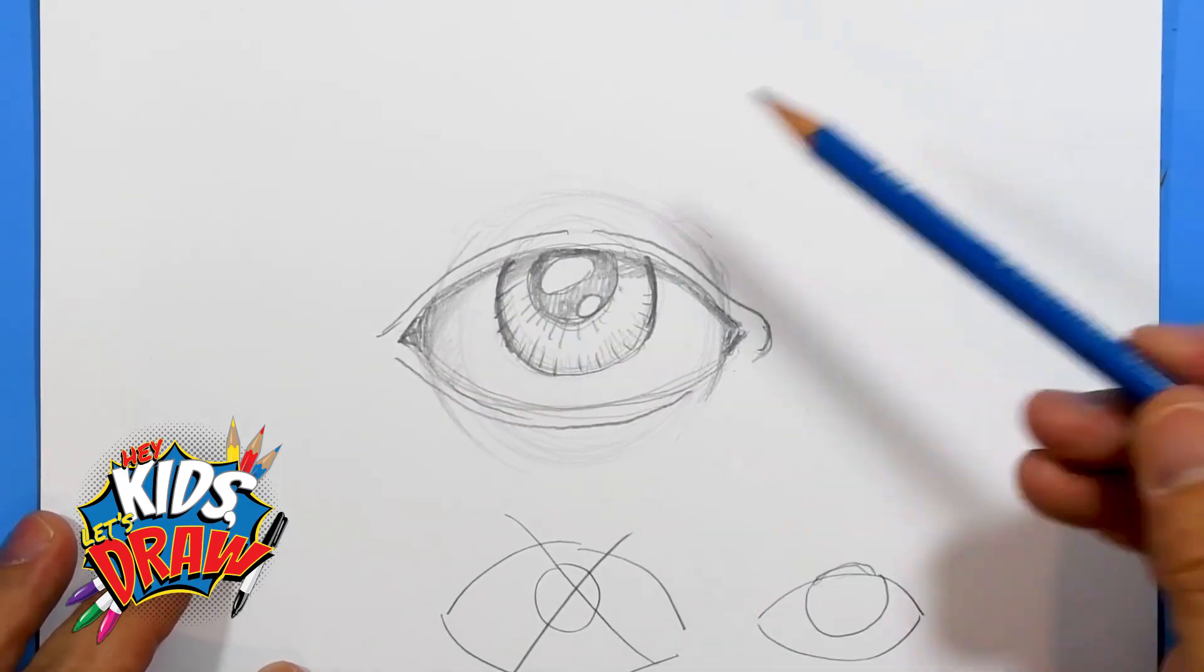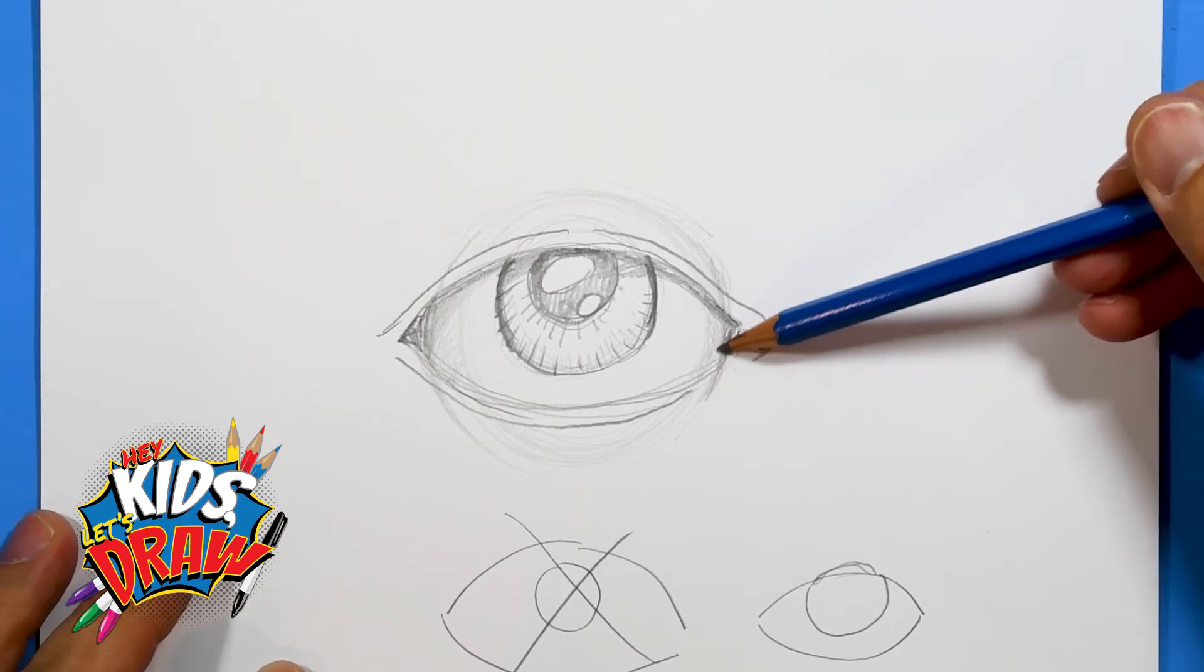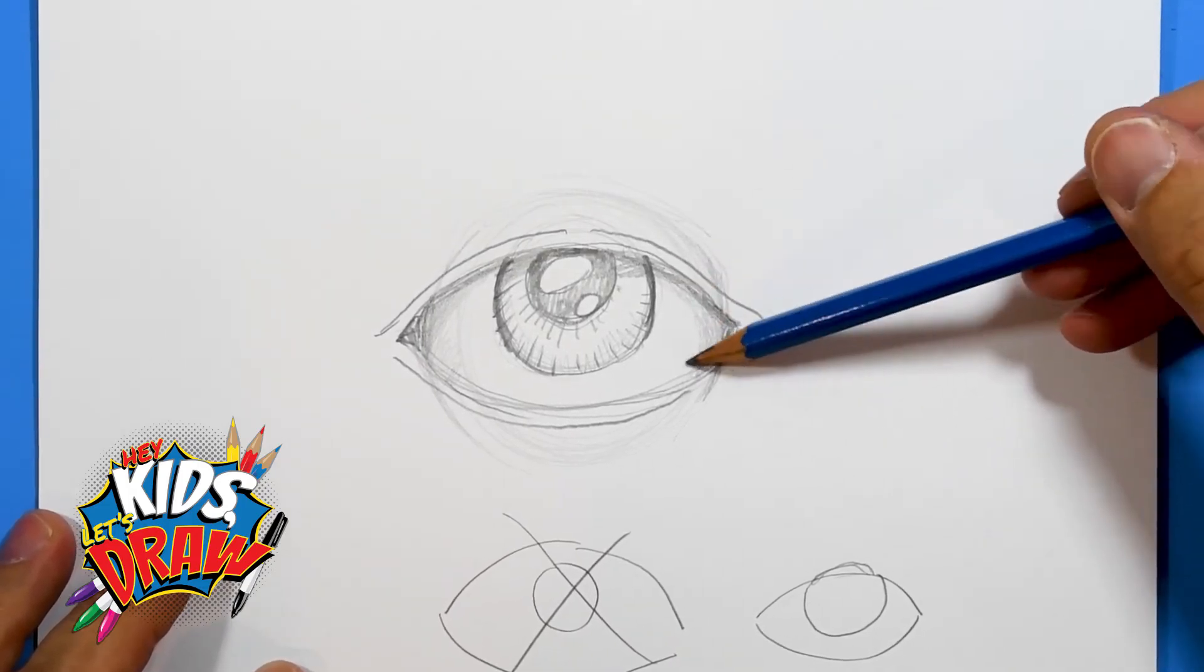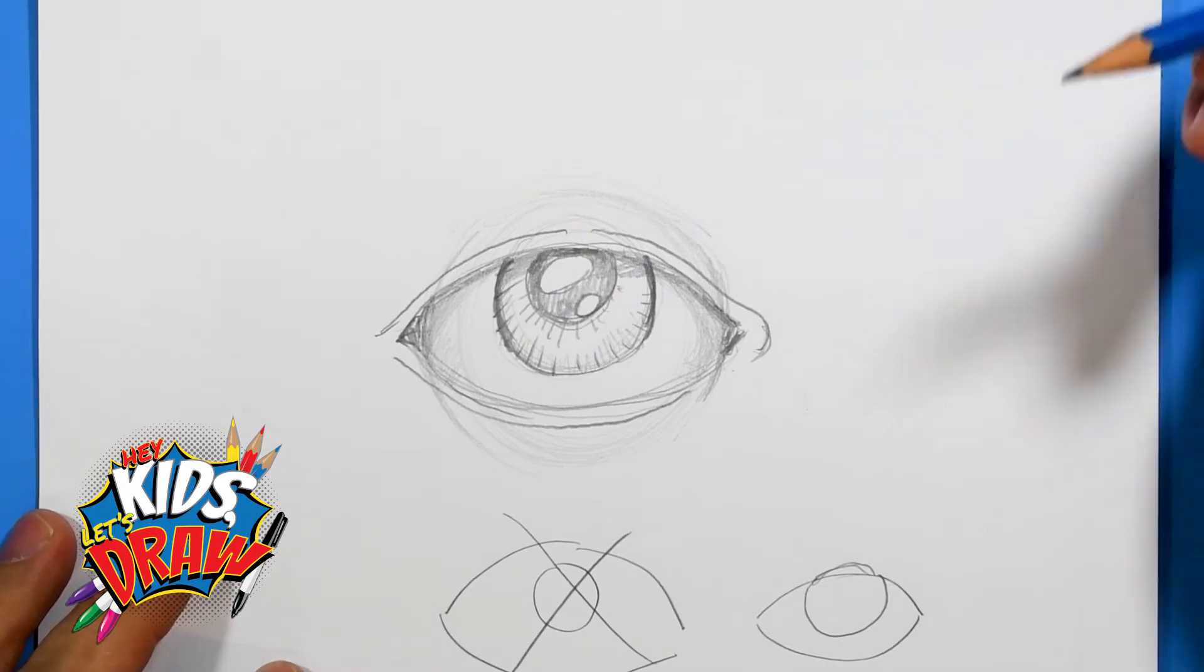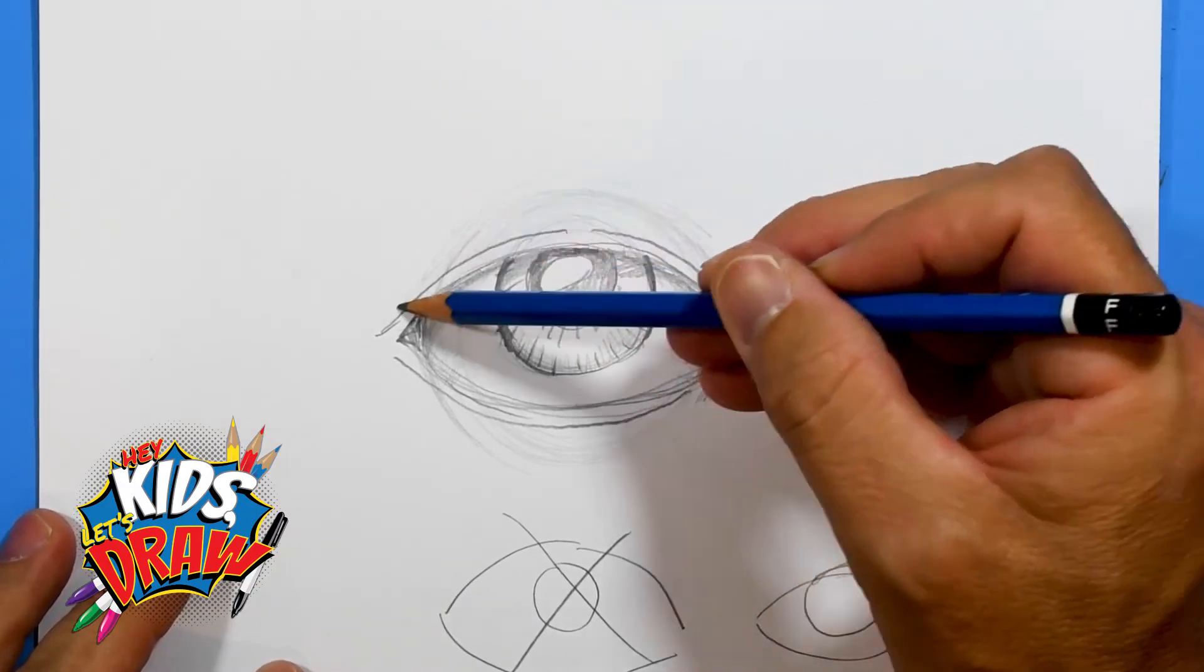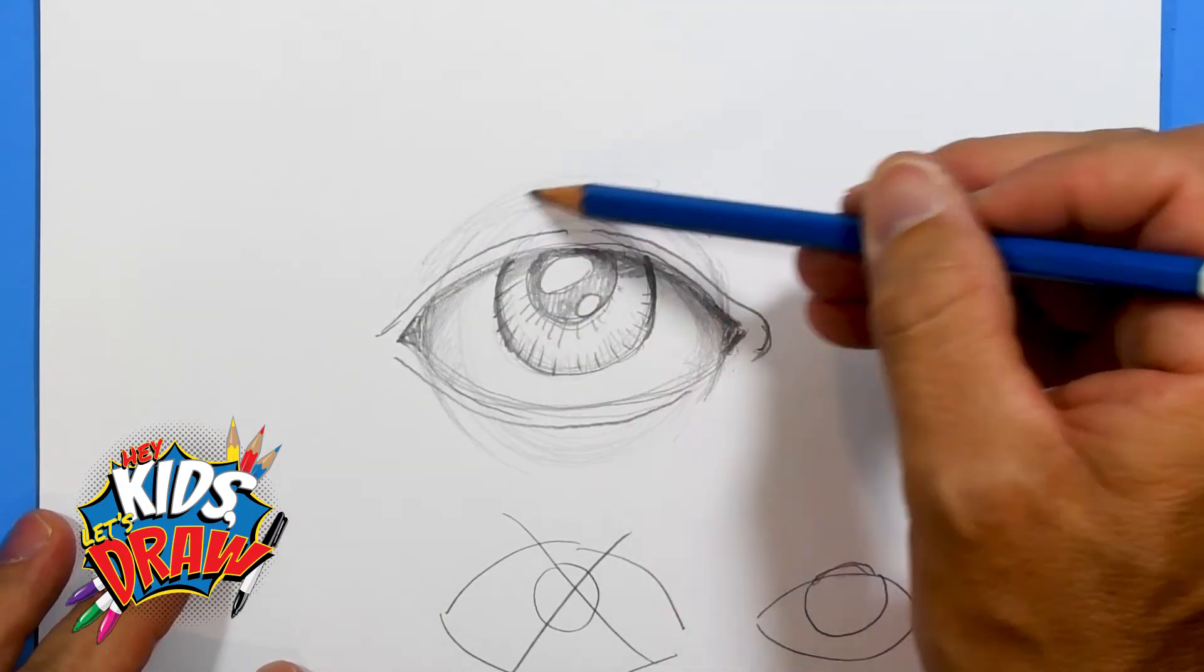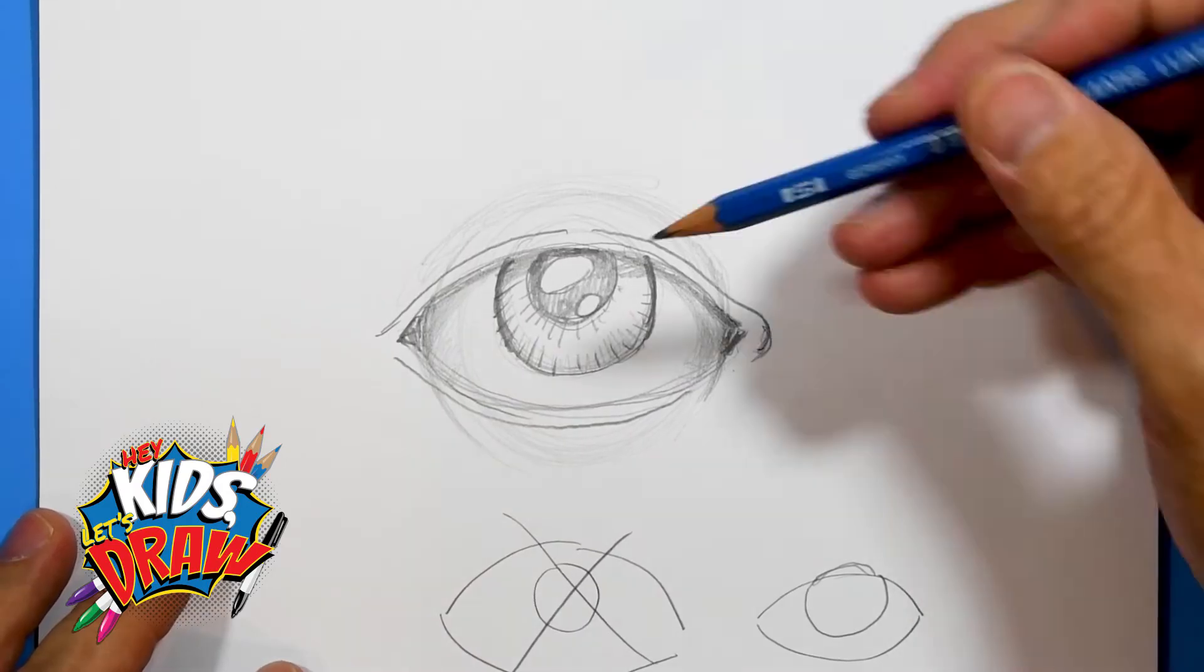Right here, to make it look like a round sphere, color lightly on the inside of this eye and the top to kind of add the curvature of the eye. Keep that curvature there. Now let's add some eyelashes.